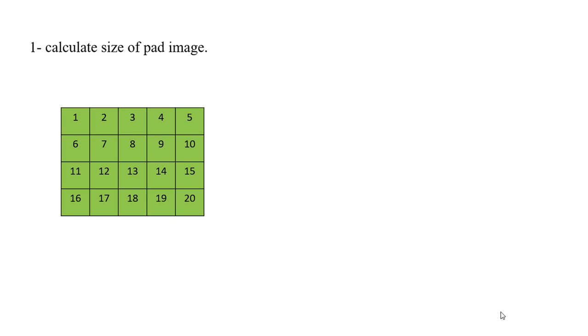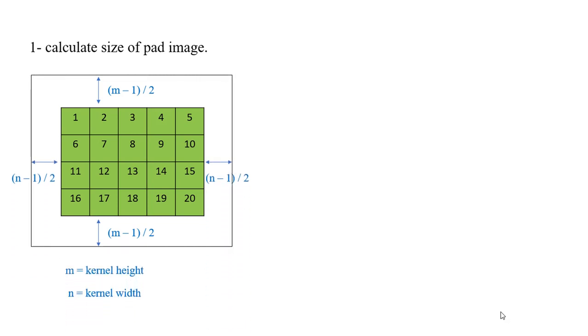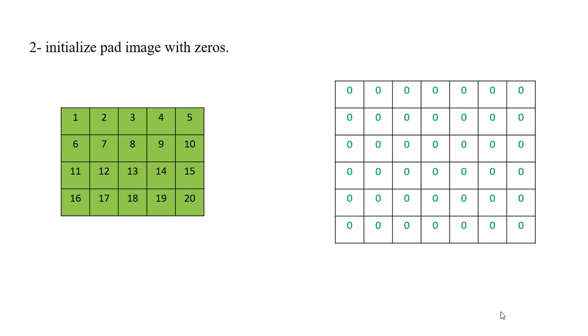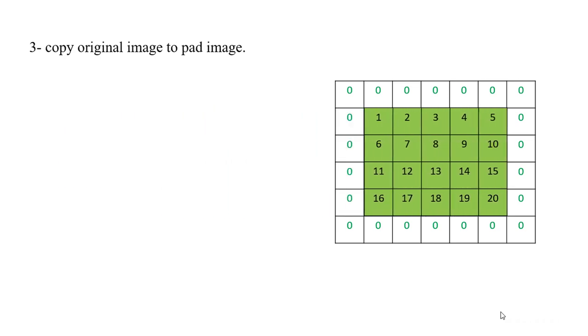We have to pad our image with (n-1)/2 at top and bottom, then (n-1)/2 to left and right. Now I have the size of the padded image. The next step is to initialize the padded image with zeros. Finally, copy the original image to the padded image.